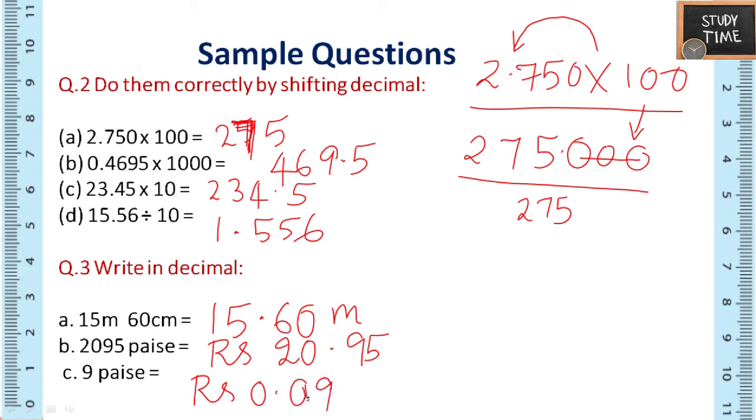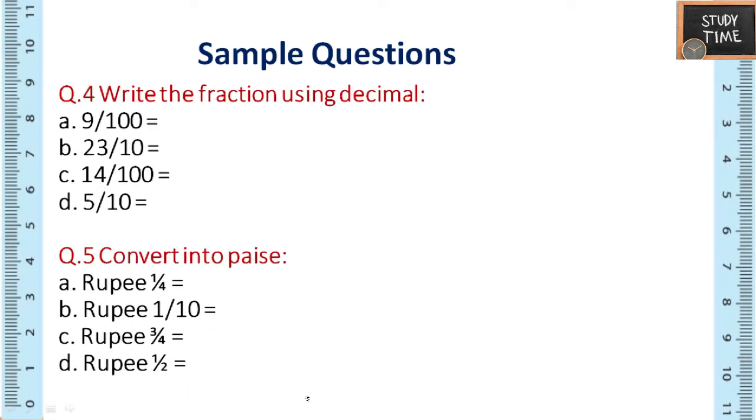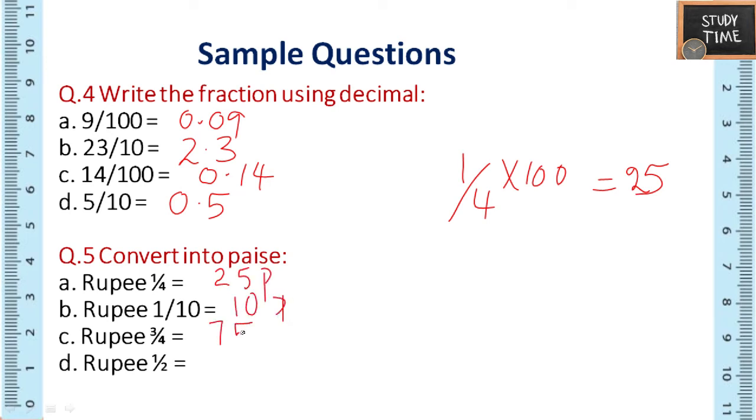This is rupees 20.95. Next 9 paise is rupees 0.09, because 9 by 100 you have to write. Next write the fraction using decimal: 9 by 100 can be written as 0.09. Next here it is 2.3. Next it is 0.14. Next it is 0.5. Convert into paise: so how you should convert, you have to multiply by 100. So 1 by 4 into 100 you will be getting 100 by 4, that is 25. So here the answer is 25 paise.